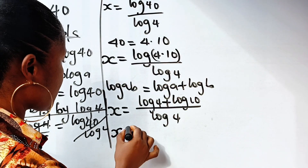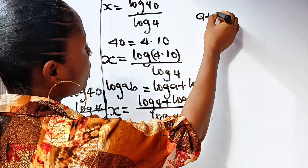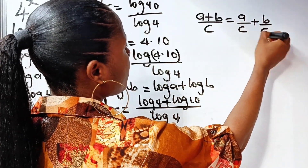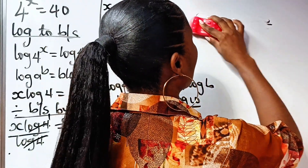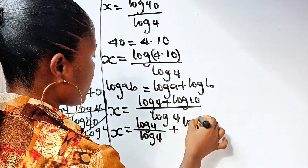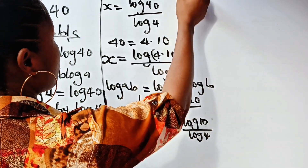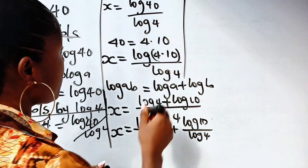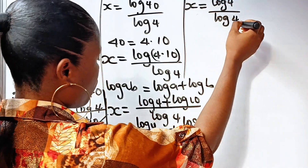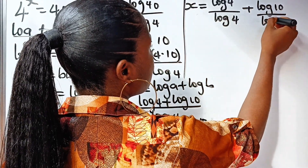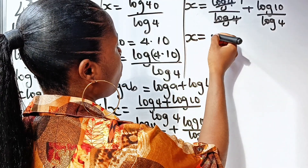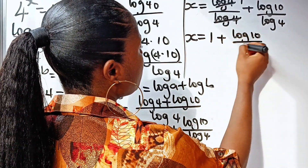When you have (a + b) divided by c, that is equal to a divided by c plus b divided by c. So we can write this as log 4 divided by log 4 plus log 10 divided by log 4. When log 4 divides itself, we have 1. So we have x is equal to 1 plus log 10 divided by log 4.